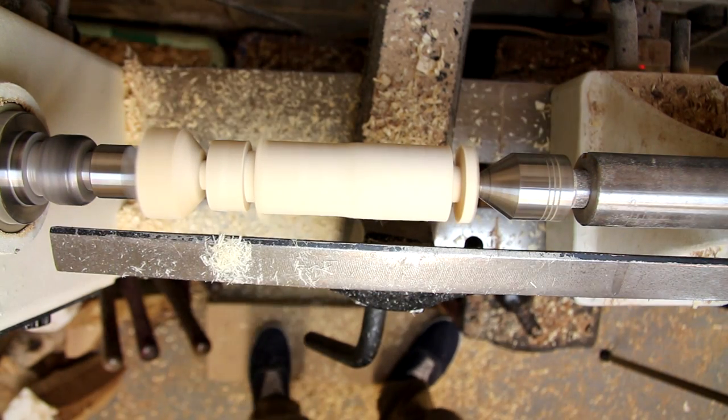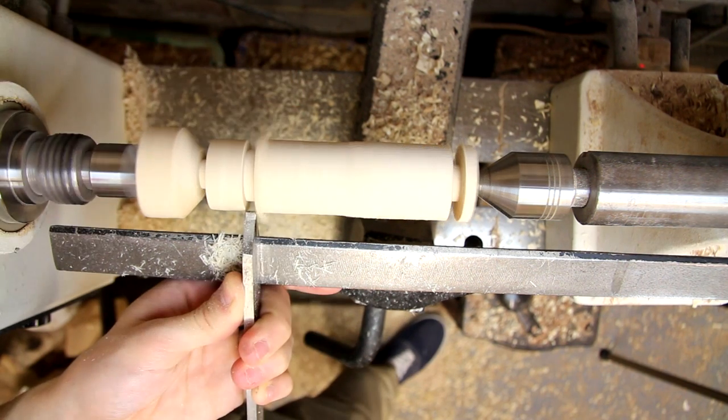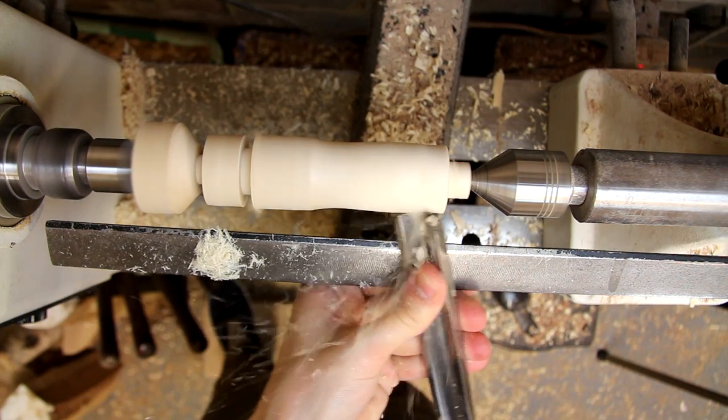I'm using a parting tool to establish the diameter of the bench dog which is going to be 19mm or 3 quarters of an inch. At this point I'll leave it slightly oversized to leave myself some room for sanding.